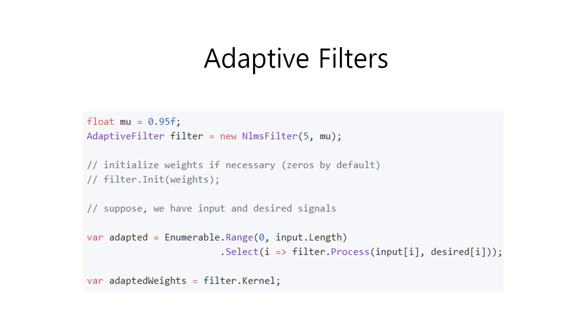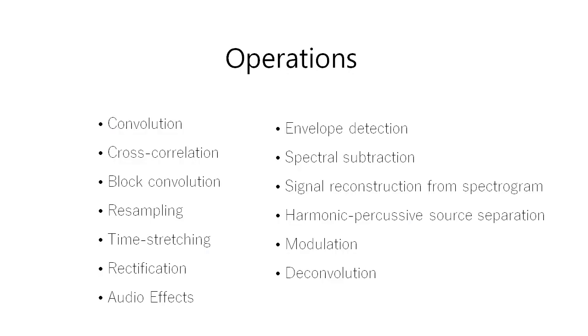So, by this moment, we had talked about the digital filtering. However, signal modification implies not only filtering. With n-waves, you can also do other operations on signals, such as convolution, cross-correlation and block convolution, resampling, time-stretching, which is really cool stuff, and various well-known audio effects, such as wah-wah, phaser, flanger, vibrato, pitch shifter, and others.